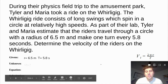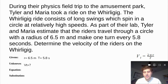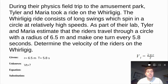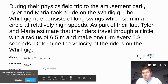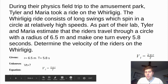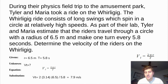Our unknown is the tangential velocity of the riders. We have tangential velocity, radius, and the period, so the tangential velocity equation is the one to use. We plug in our numbers: velocity equals 2 times π times 6.5, divided by the period of 5.8, and that equals 7.9 meters per second. This is velocity, so the units are meters per second.